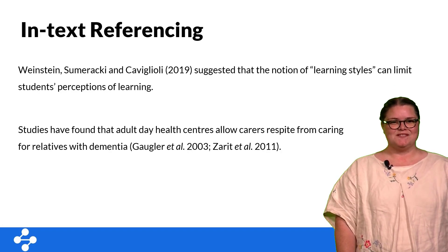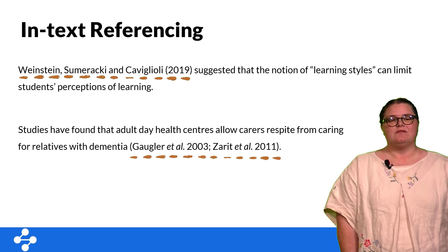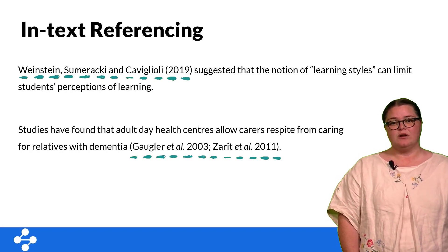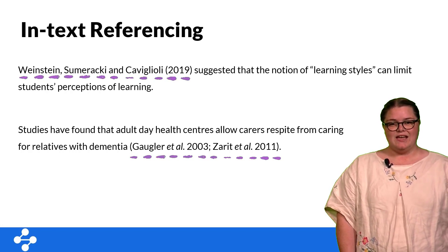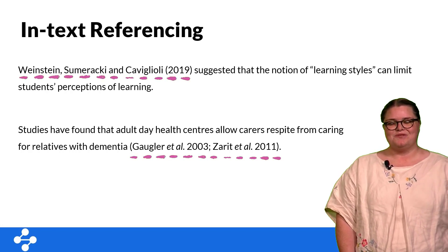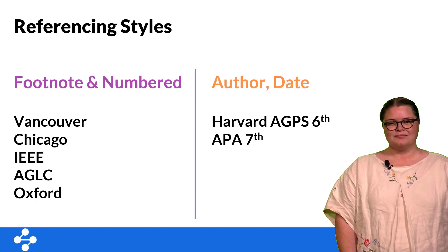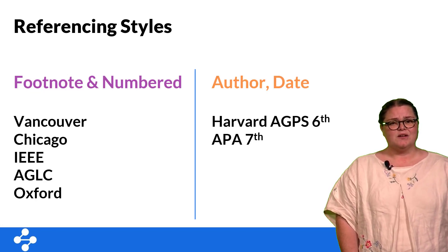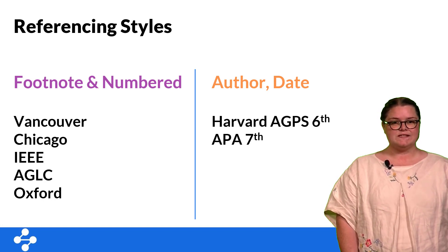Let's take a look at in-text referencing. Here we're creating a quick point of reference for the reader to let them know that the information we're using has come from another source, while also giving them the information they need to find the details in our reference list. Despite the large number of different styles, they do fall into two main categories: the author-date system and the footnote system.